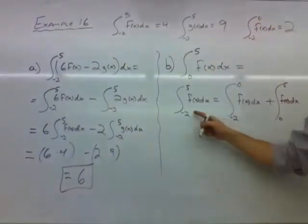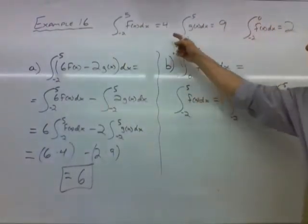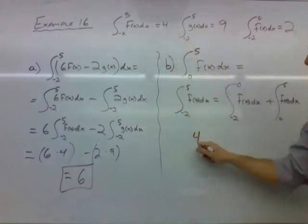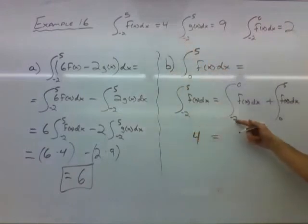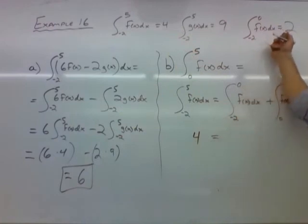Now keep in mind what we have here. The integral from negative 2 to 5 of f(x), that was given to us. That's 4. So we have 4 equals the integral from negative 2 to 0, which was also given to us. That's 2.